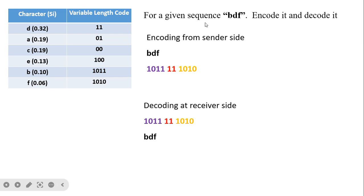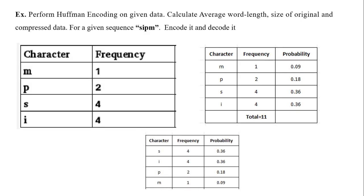Encoding/decoding example for sequence BDF: B encodes as '1011', D as '11', F as '1010'. At the decoder: '1' then '1' appears — present at multiple nodes, so we look further; '10' narrows to last two; '101' narrows to B and F; adding '1' gives B. Then '11' matches only D. Then '1010': '1', '10', '101', and the only match is F. So the decoded sequence is B, D, F.